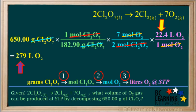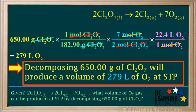Notice the 22.4 liters restricts us to three significant figures. So we can now state the answer as: decomposing 650 grams of Cl2O7 will produce a volume of 279 liters of O2 at STP.